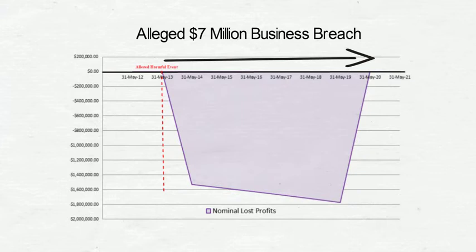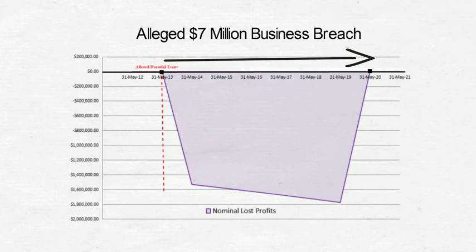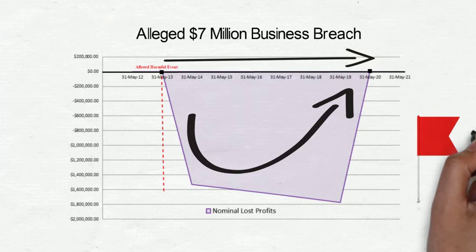I prepared a graphical representation of what the PhD's analysis would look like. First, the harmful event occurred on May 31, 2013 — this is the beginning of the alleged damage period. Second, the opined ending of the damage period is May 31, 2020, or 7 years after the harmful event. Third, we see that damages increased 3% annually until they magically stopped on May 31, 2020.